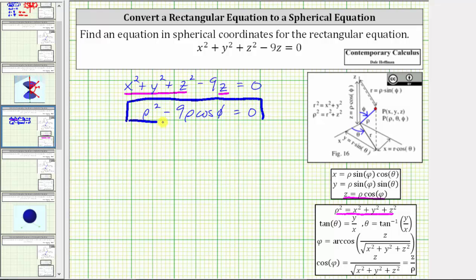Let's continue and see if we can simplify further. Notice how on the left, both of these terms have a common factor of rho. If we factor out rho from the left side of the equation, this gives us rho times the quantity rho minus nine cosine phi equals zero.